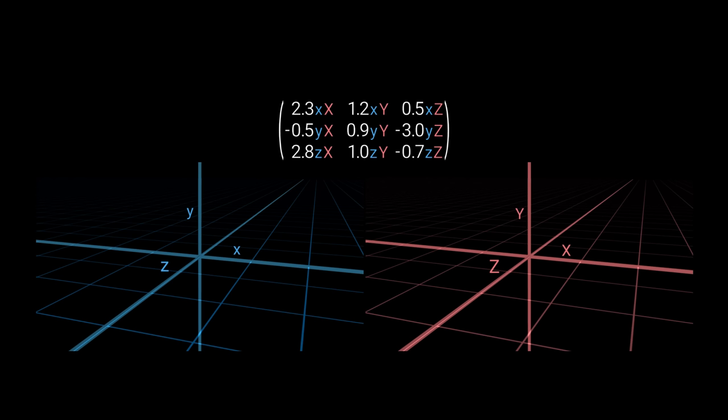So let's start explaining what these labels mean. Take this one for example, xy. It means this component is associated with the x-axis of the blue space, and the y-axis of the red space.